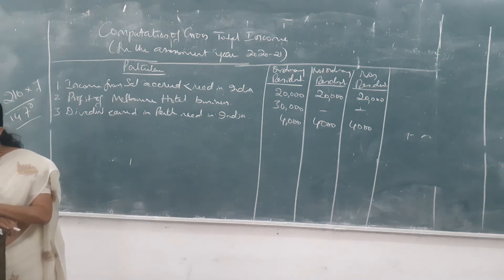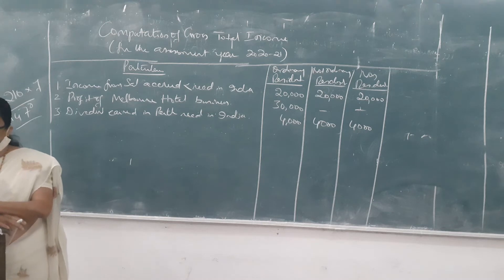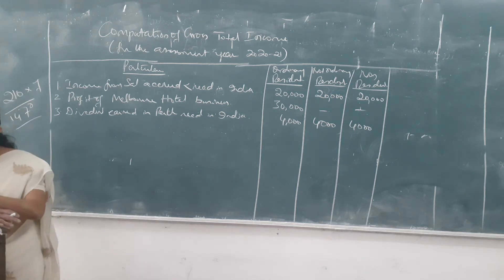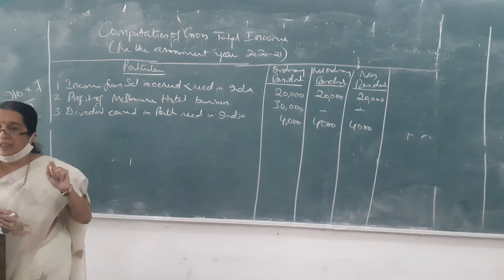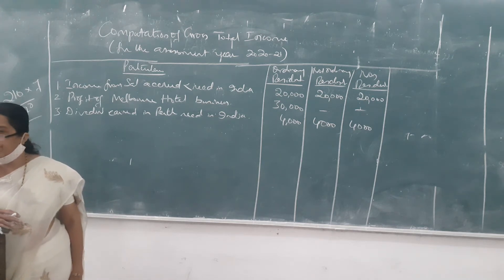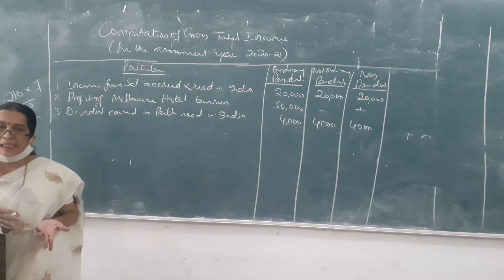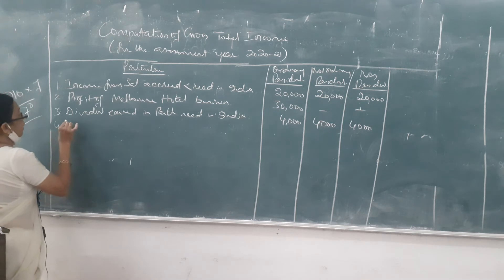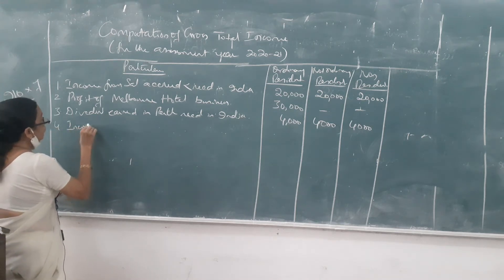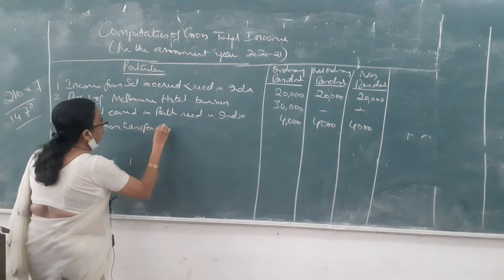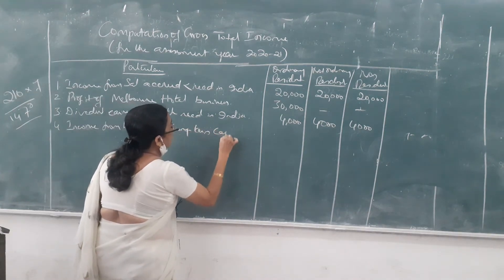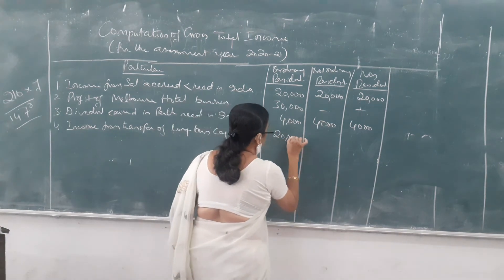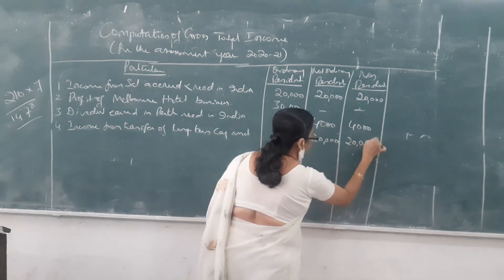Fourth: income from transfer of a long-term capital asset in India — 20,000. The assessee has earned income by selling a long-term asset; transfer means sale. This income is earned and received in India, so it is applicable to all three. Amount: 20,000 each.